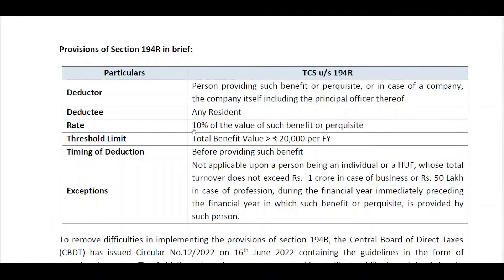Under Section 194R, the deductor is the person who is providing such benefit or perquisite — the company or person giving the benefit. The deductee is the recipient of the benefit or perquisite. Tax shall be deducted at 10% of the value of such benefit or perquisite. We'll cover valuation shortly.